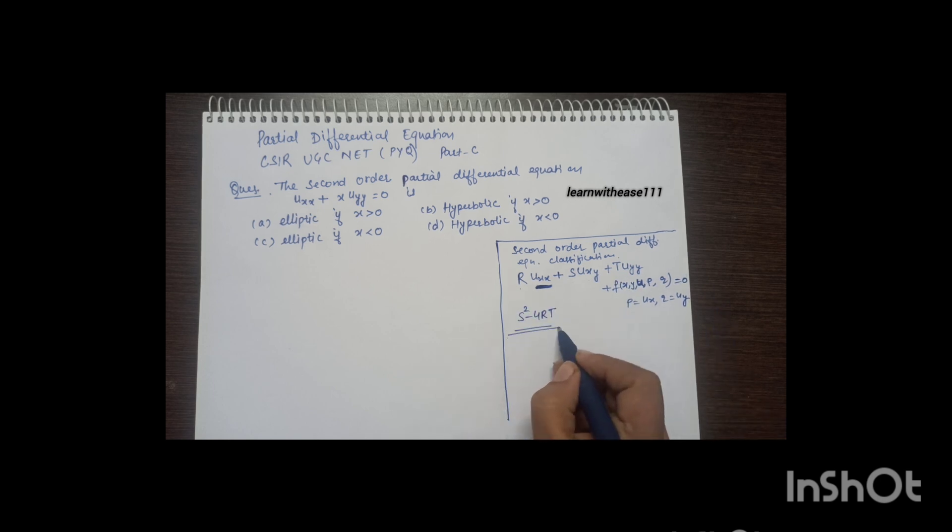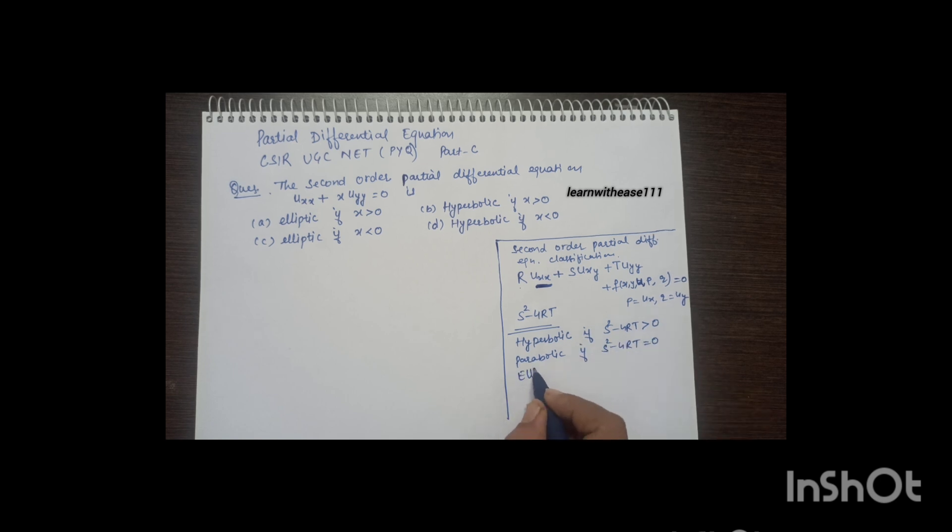We calculate s²-4rt. The equation is hyperbolic if s²-4rt > 0, parabolic if s²-4rt = 0, and elliptic if s²-4rt < 0.